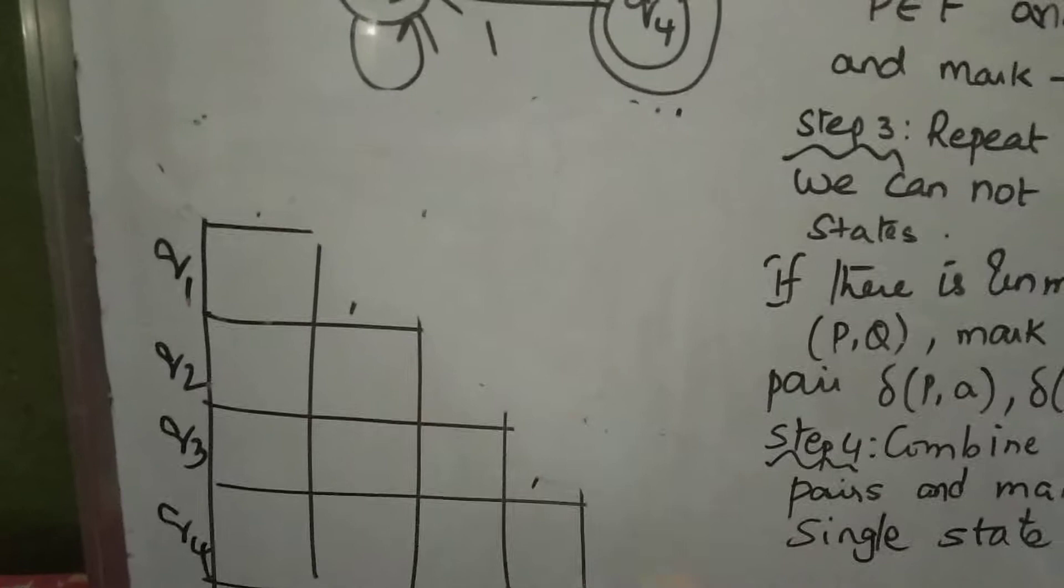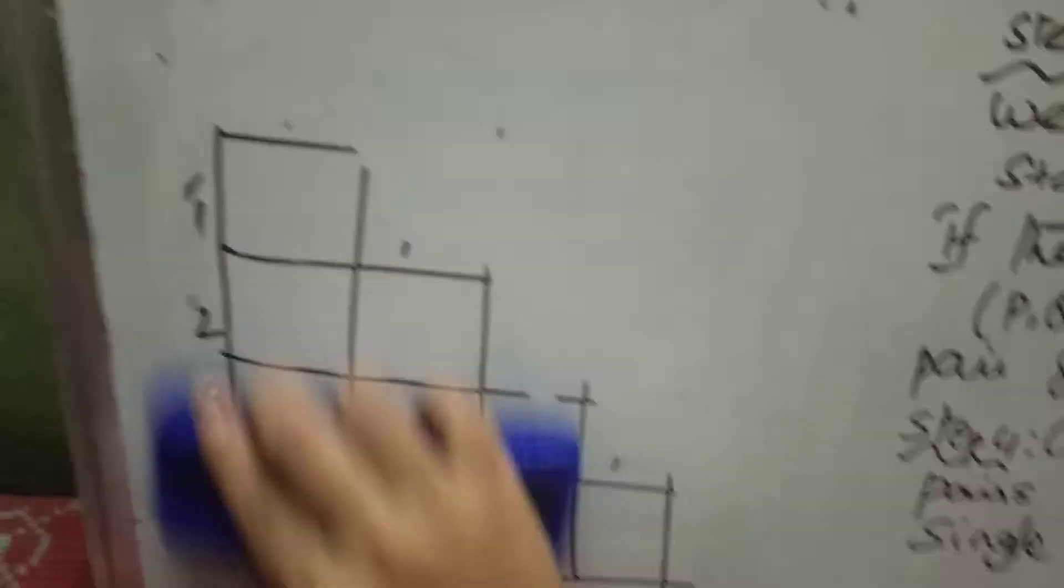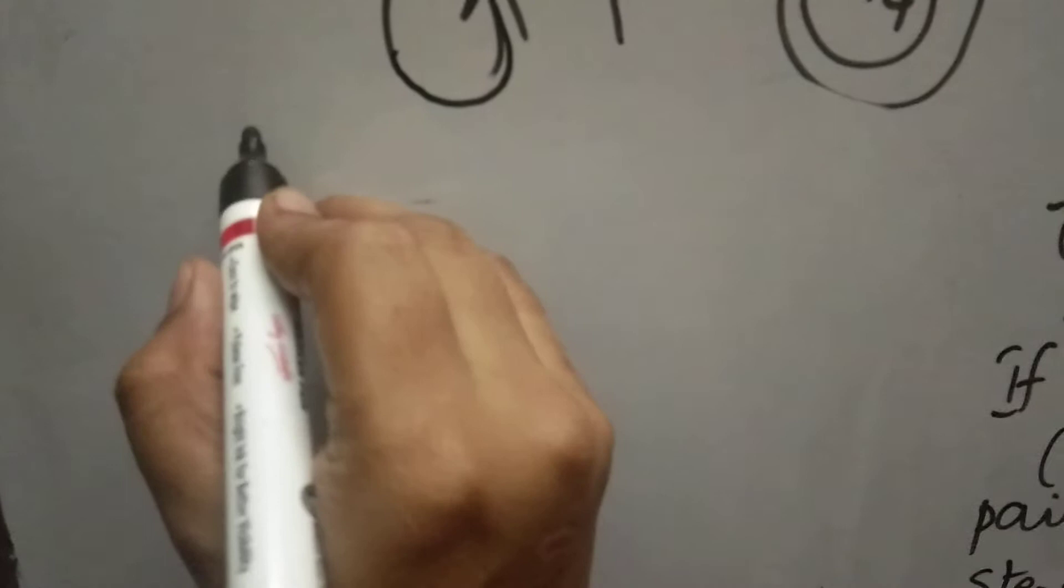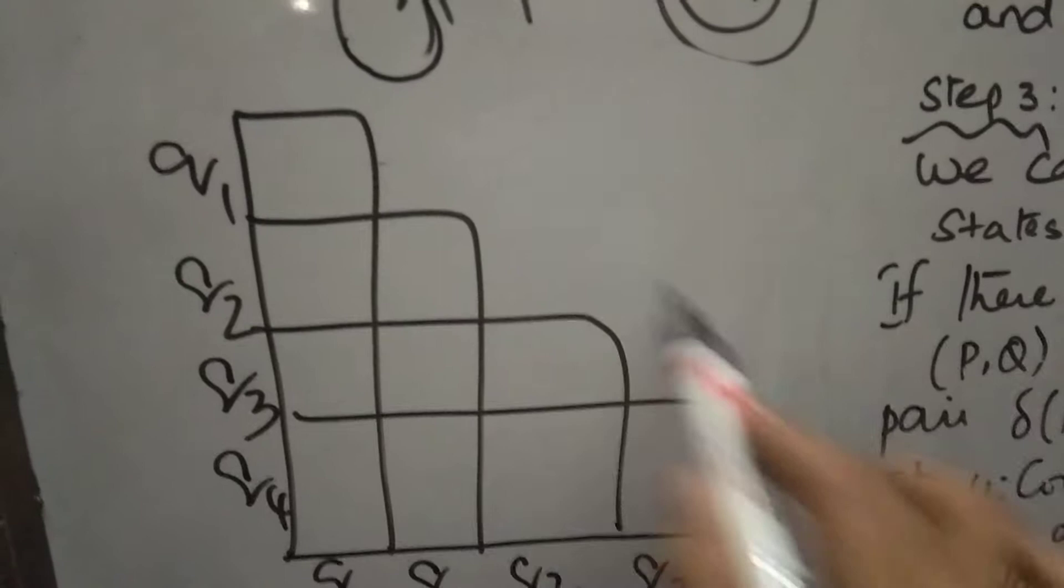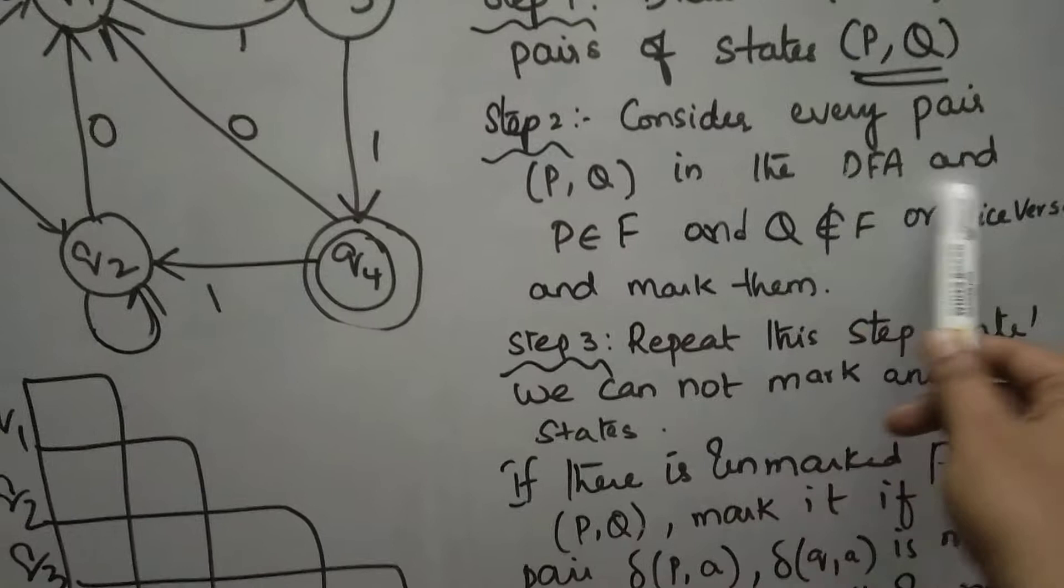In this table, you can consider whether the pairs are marked or unmarked. Let us draw the table. Q0, Q1, Q2, Q3, Q4. This is the final table.